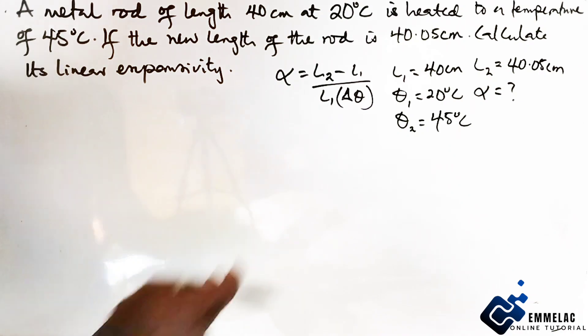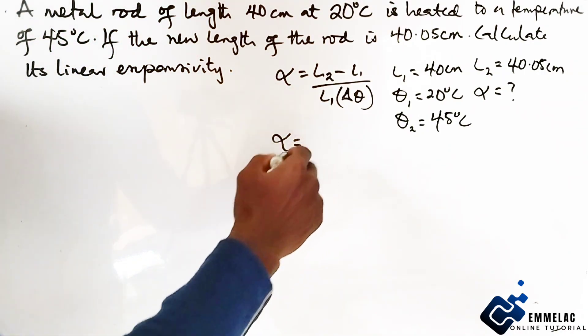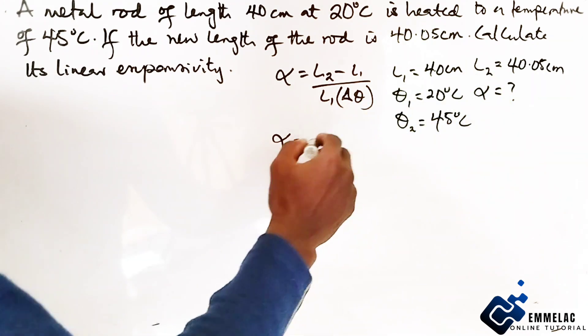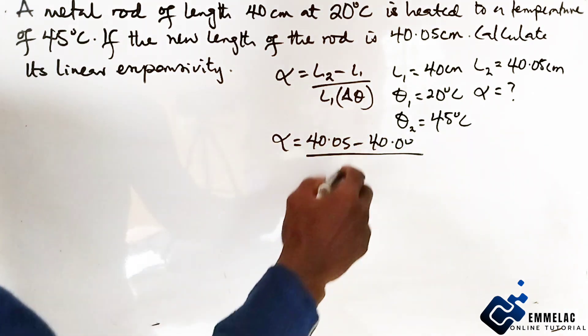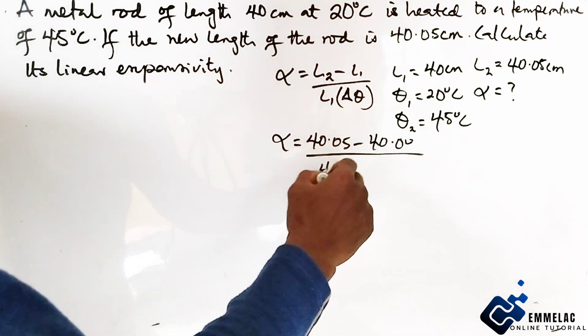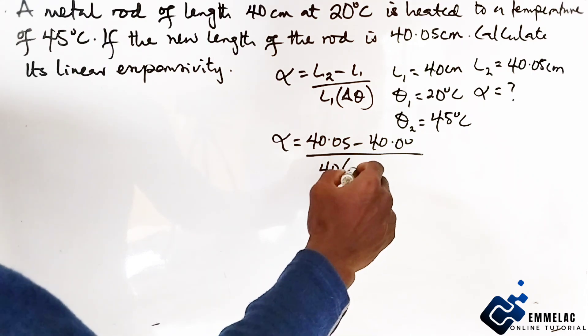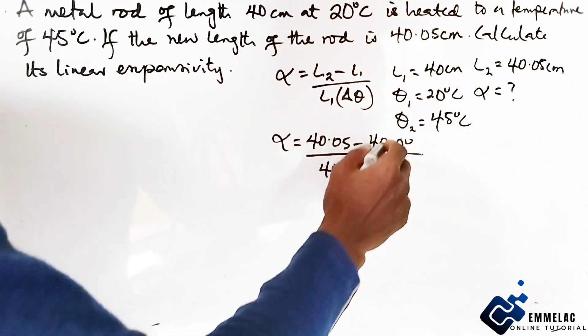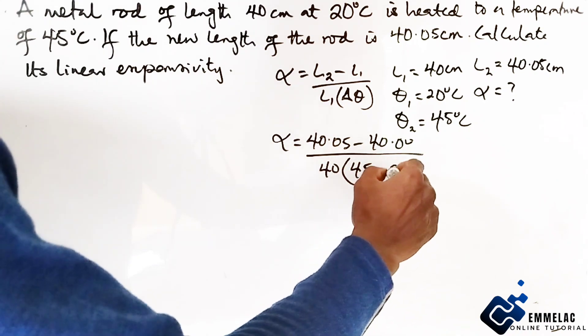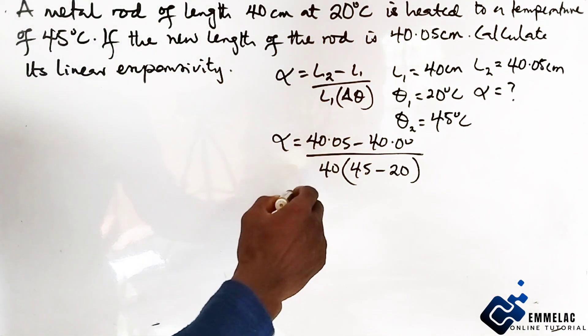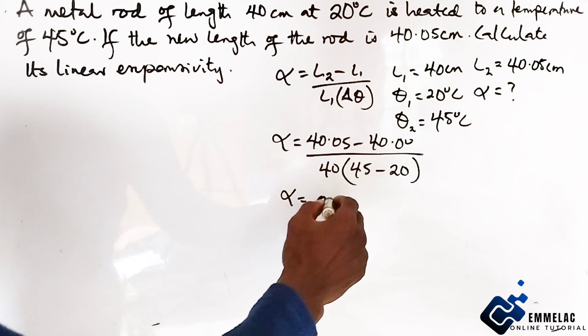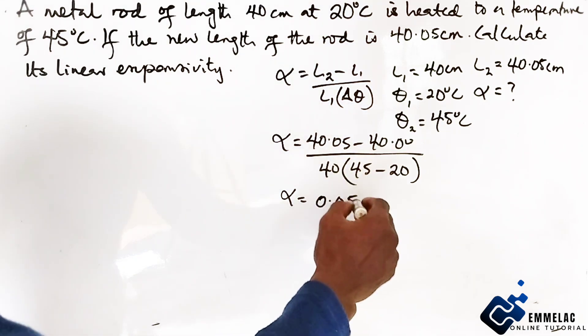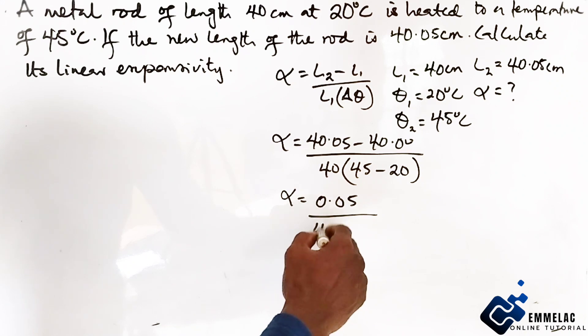Let us implement all these parameters into this formula. So here we have that L2, which is 40.05 minus 40, then 0.00, then over 40, then into, we find 45 minus 20.